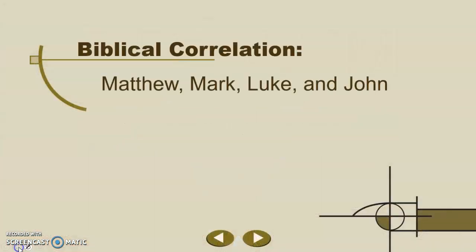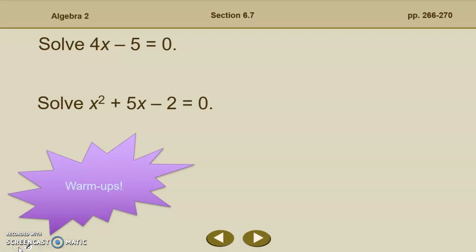Let's do a quick review here to get started. Let's solve 4x minus 5 equals zero. We have a linear function here set equal to zero. We solve it by adding 5 to both sides and then dividing by 4, and x equals 5 fourths. When we solve a quadratic equation like x squared plus 5x minus 2, we can solve that by factoring. And if factoring doesn't work, then we have to go to the quadratic formula.